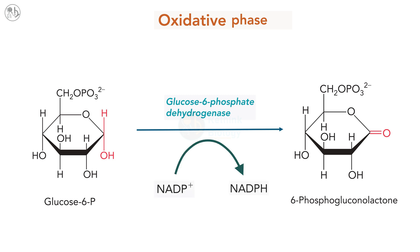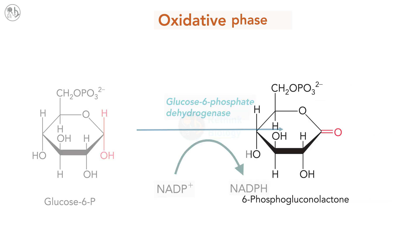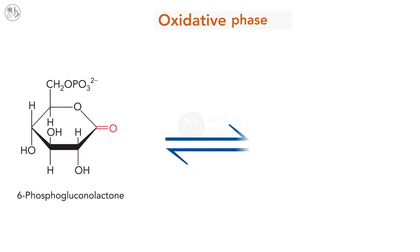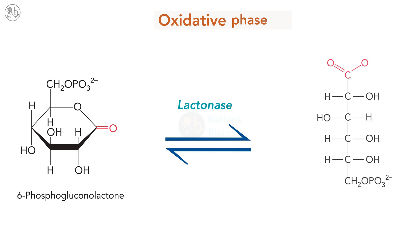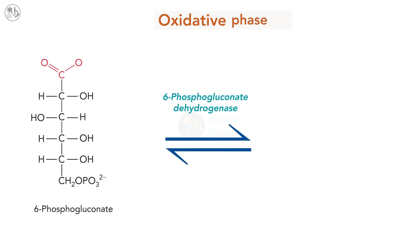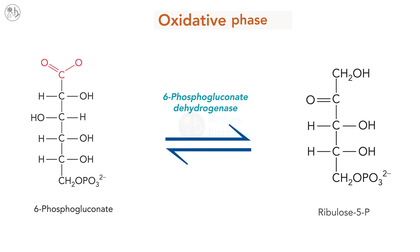In the second enzymatic reaction, 6-phosphogluconolactone is hydrolyzed by lactonase to produce the open-chain monosaccharide 6-phosphogluconate. In the third enzymatic reaction, 6-phosphogluconate is oxidized and decarboxylated in a reaction catalyzed by 6-phosphogluconate dehydrogenase. This reaction generates ribulose 5-phosphate and the second molecule of NADPH.